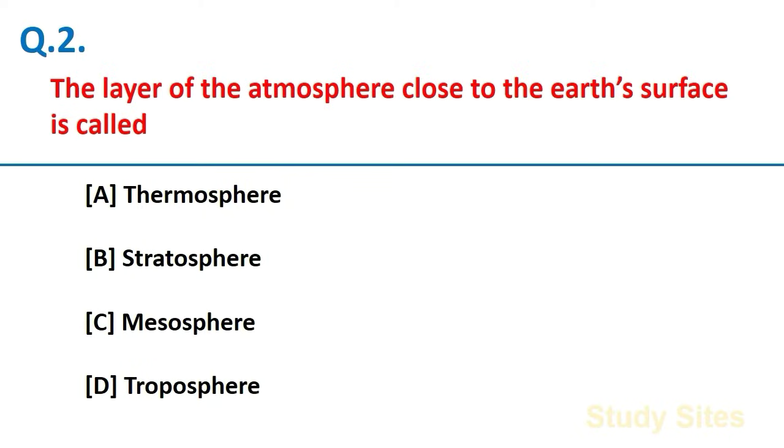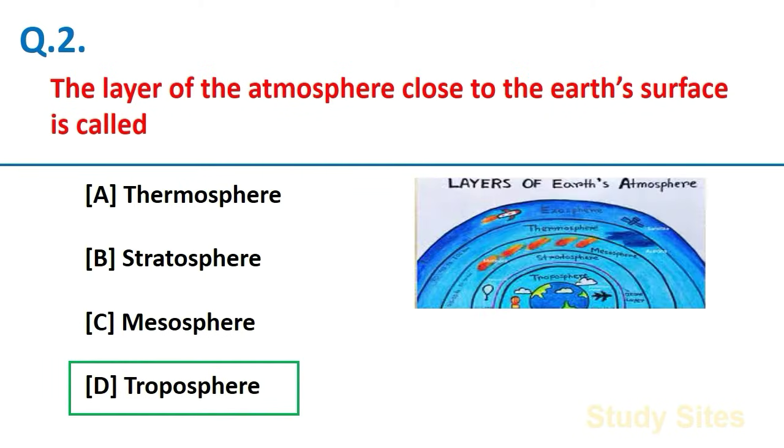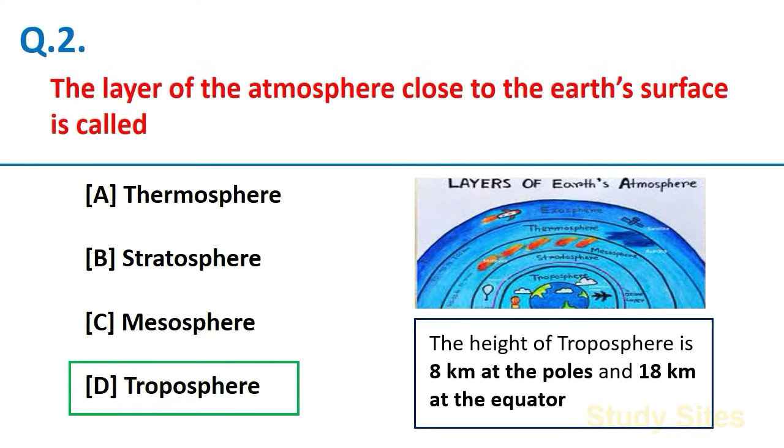The layer of the atmosphere close to the Earth's surface is called Troposphere. And the height of Troposphere is 8 km at the poles and 18 km at the Equator.